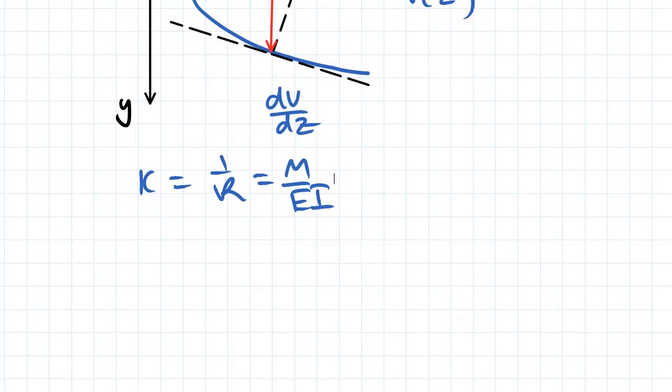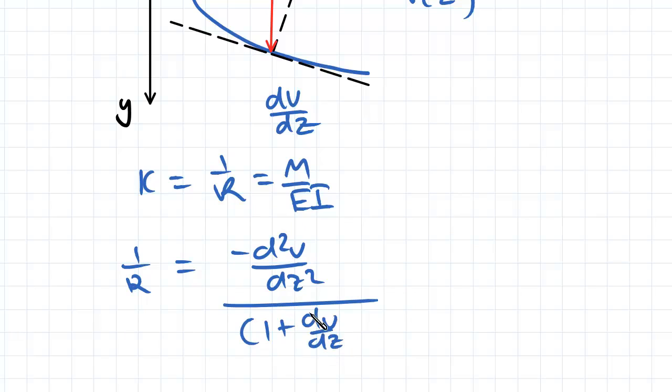So using a bit of calculus and geometry, which is a little bit outside the scope of this course, 1 over r is equal to negative d squared v dz squared divided by 1 plus (dv/dz) squared all to the power of 3 over 2.